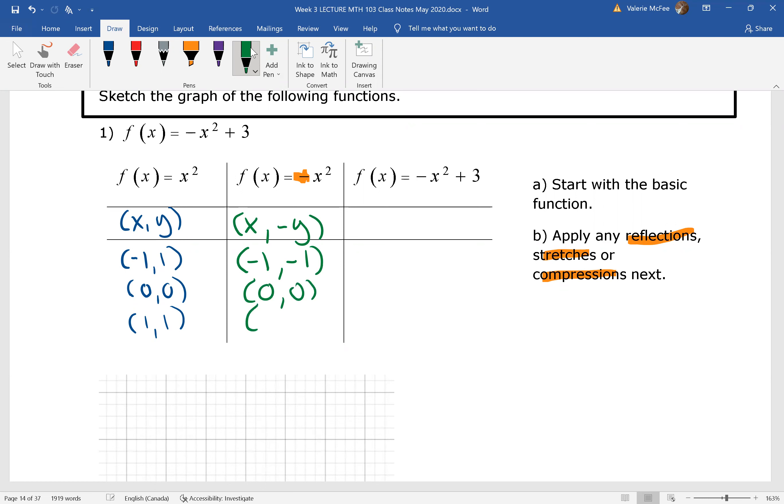X values stay the same, the opposite of y. And now we have plus 3 outside of the function. Are we changing x or are we changing y? It's outside of the function, so we're changing y. We're taking that negative y that we just found and adding 3. So x doesn't change.